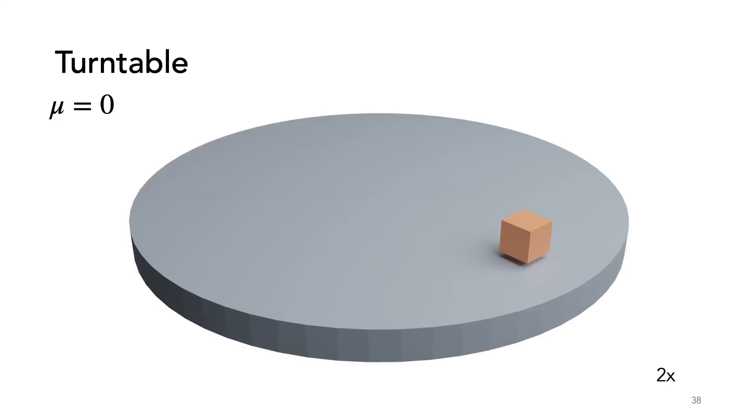We also create a new friction accuracy benchmark where we place a cube on a rotating table. With mu equal to 0.1, the cube sticks but quickly slips off the table. With mu equal to 0.5, the cube sticks on longer but eventually falls off the table as the table gets faster. As expected, with mu equal to 1, the cube sticks to the table for the entire simulation.